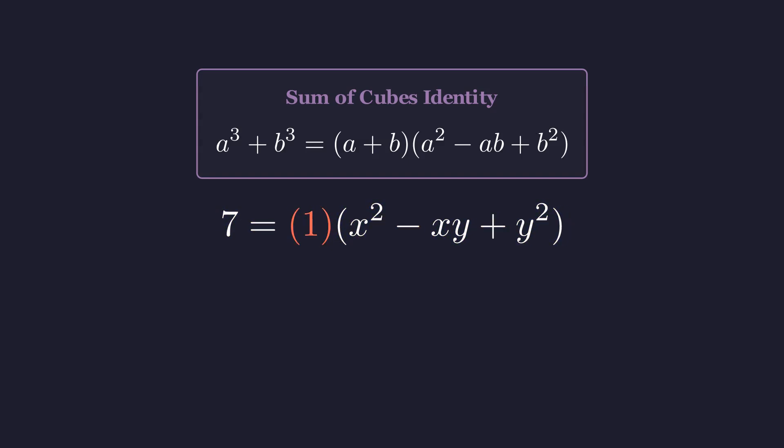Of course, multiplying by 1 doesn't change anything, so we can drop that factor. This gives us 7 equals x squared minus xy plus y squared. Notice we now have one equation with two unknowns: x squared plus y squared and x times y. If we could express the first in terms of the second, we'd be golden.